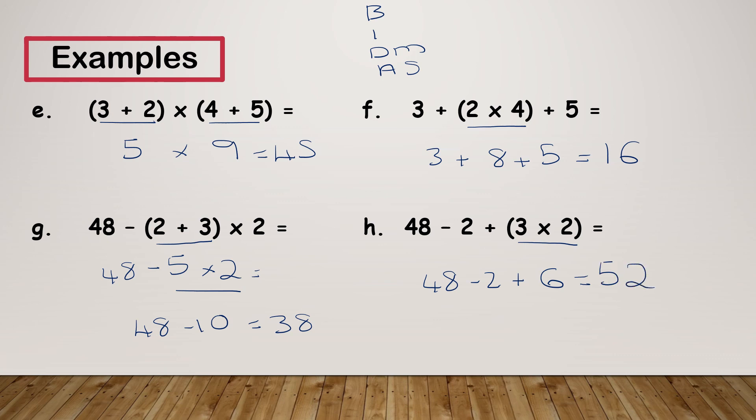So if you're dealing with a BIDMAS question, I would always recommend writing down your acronym. Don't forget: Brackets, Indices, Division and Multiplication, Addition and Subtraction — always do them in the correct order. But remember, if you've got division and multiplication only, or addition and subtraction only, we're still working from left to right. Thank you very much for joining me. Hopefully that helped, and I'll see you in the next video.